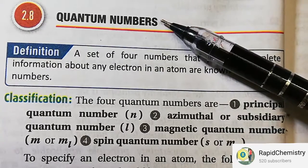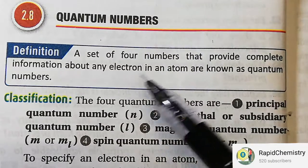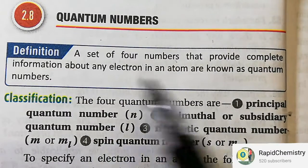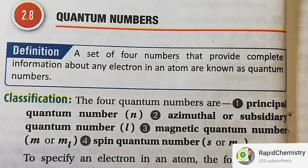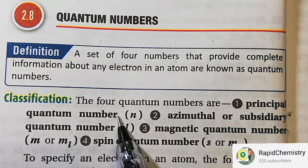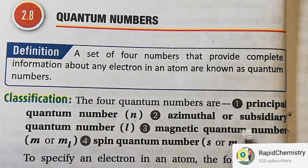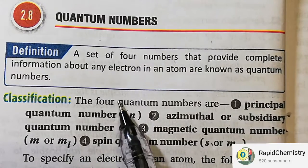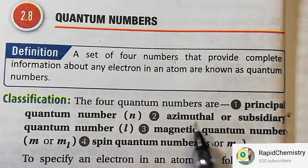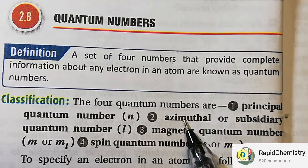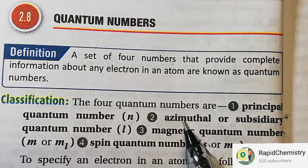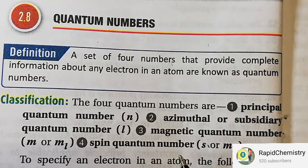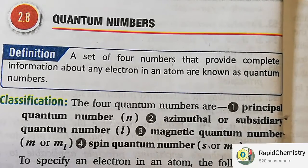Quantum numbers — what are they? These are a set of four numbers that provide complete information about any electron in an atom. The four quantum numbers are: the principal quantum number N, the azimuthal quantum number small l, the magnetic quantum number M, and the spin quantum number. The principal quantum number came from Bohr's theory, and the azimuthal quantum number came from Sommerfeld's theory. Today we will cover the magnetic quantum number and the spin quantum number, and also how these four quantum numbers are related to each other.